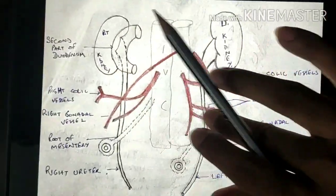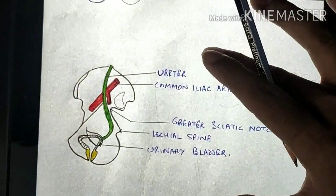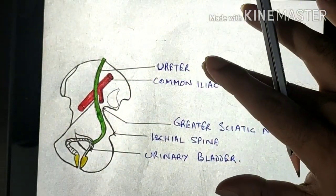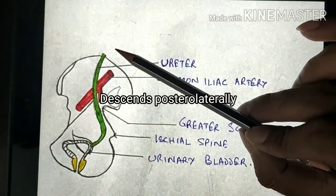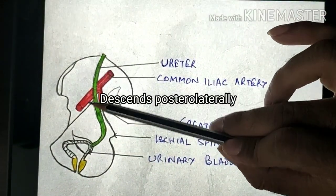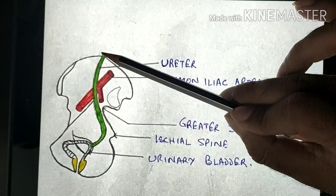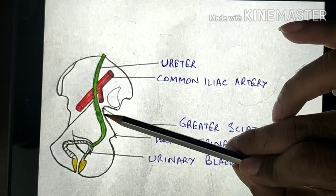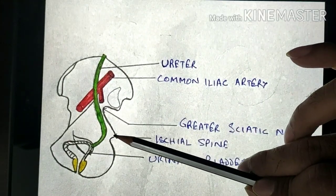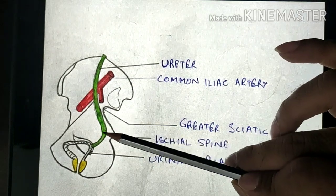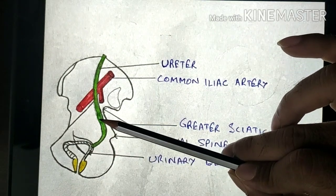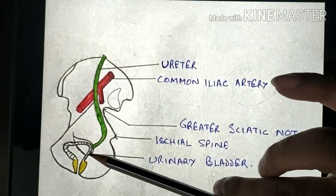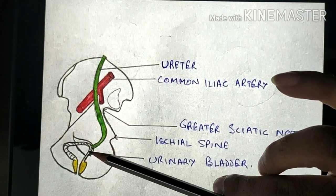The pelvic part of the ureter is roughly the same length as the abdominal part. It descends posterolaterally on the lateral wall of the lesser pelvis along the anterior border of the greater sciatic notch. Opposite to the ischial spine it turns anteromedially and opens into the base of the urinary bladder.